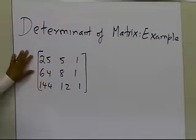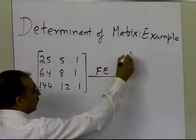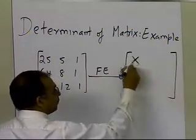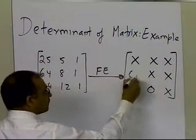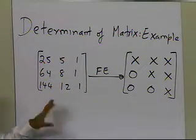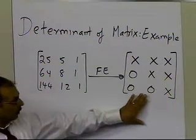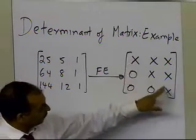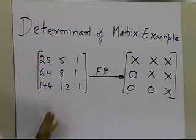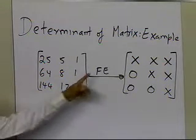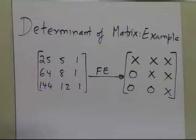Once we apply the forward elimination steps on this matrix, we're going to end up with an upper triangular matrix. The determinant of the original matrix will be the same as the determinant of that upper triangular matrix. We already know the determinant of an upper triangular matrix is simply the product of the diagonal elements, so it makes it very easy to find the determinant of the original matrix.